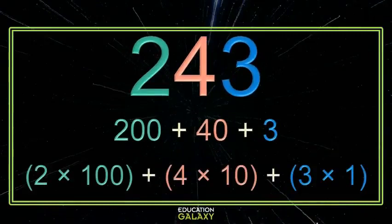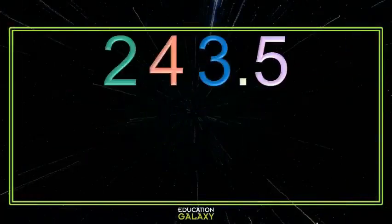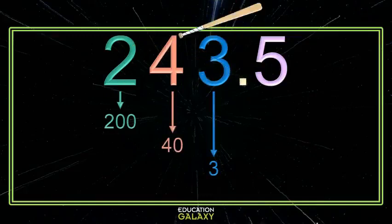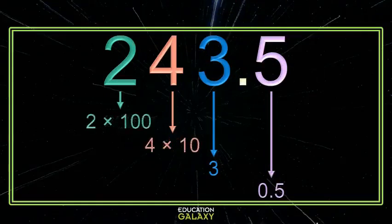Today we're just going to change it by a little teeny bit — we're just going to throw in some decimals. It doesn't change anything. We're going to start the same way: break our number into its place values. That 2 represents 200, that 4 represents 40, and so on. The 5 is in the tenths place, so that's 5 tenths. Then we look at these as a product of place values: the 200 is 2 one-hundreds, the 40 is 4 tens, and the 3 is 3 ones. The 5 in the tenths place is 5 tenths.